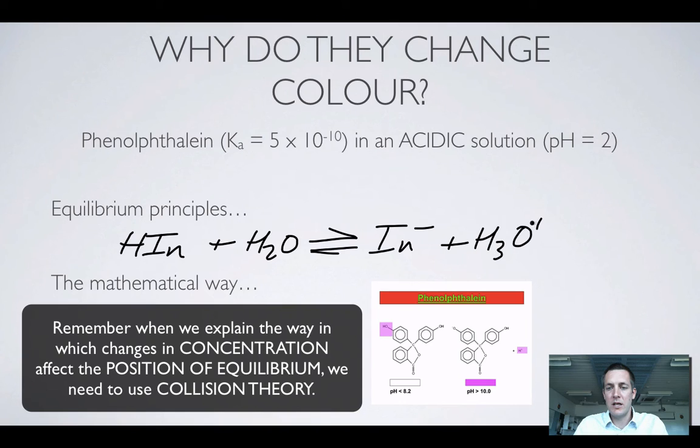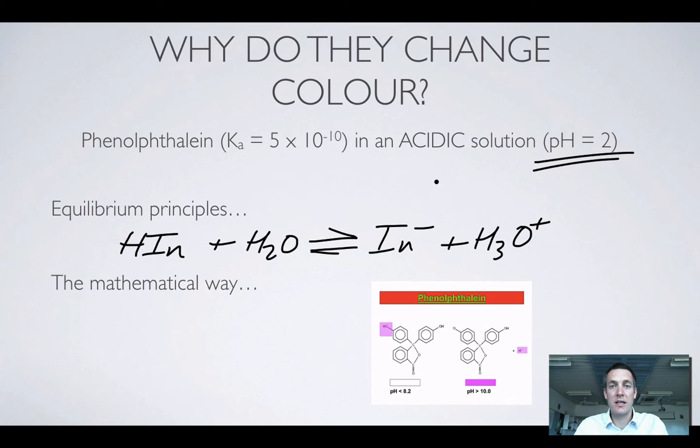Now we're in an acidic solution here, pH 2. So the concentration of H3O+ has risen and the higher the concentration of H3O+ ions the more frequent collisions will be between these two and the faster the rate of the backward reaction, so the equilibrium will shift towards the left hand side. In an acidic solution we'd expect to see quite a high concentration of HIn. The concentration of In- would be falling and so it would appear colourless because there's lots of HIn around and not much In-.